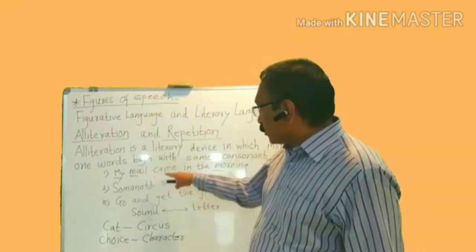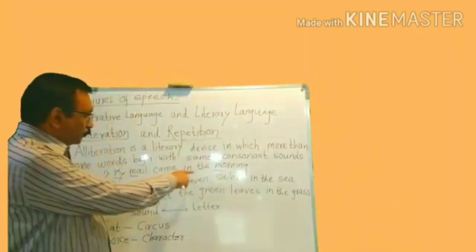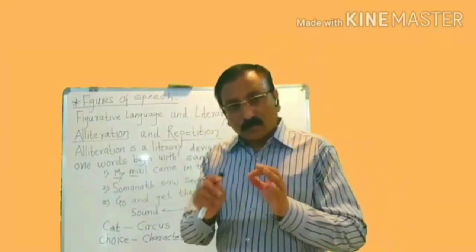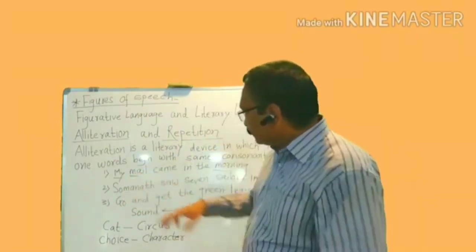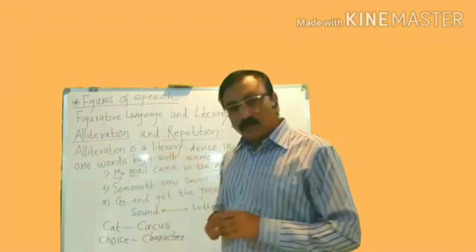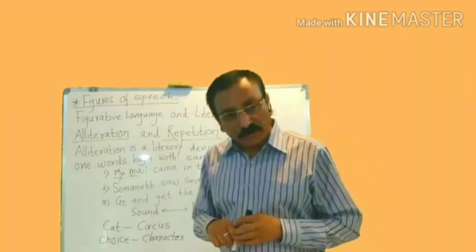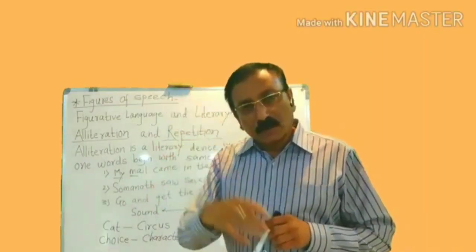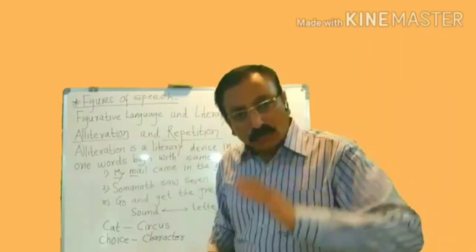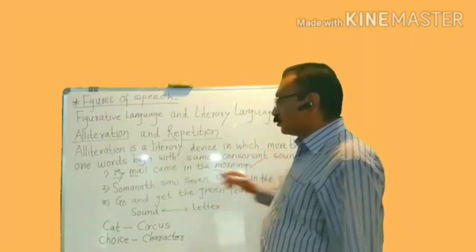My man came in the morning. If you look at this line, there are three words which begin with the same consonant sound. The first word 'my' begins with the sound 'mo'. The second word 'man' also begins with the sound 'mo'. And the last word 'morning' also begins with 'mo'. So when there is a repetition of the same sound in more than one word, that line is an example of alliteration.